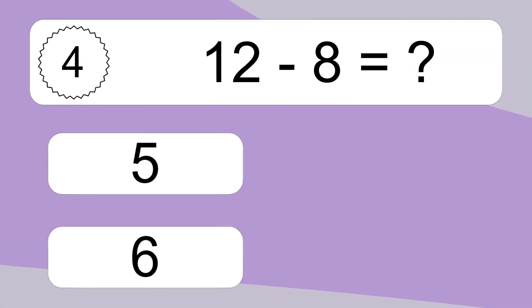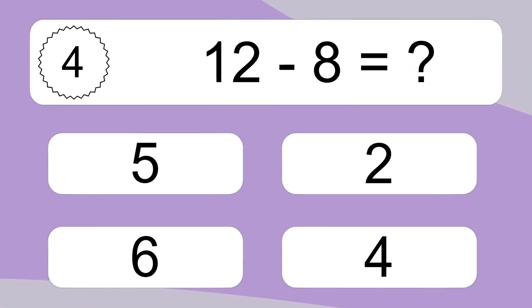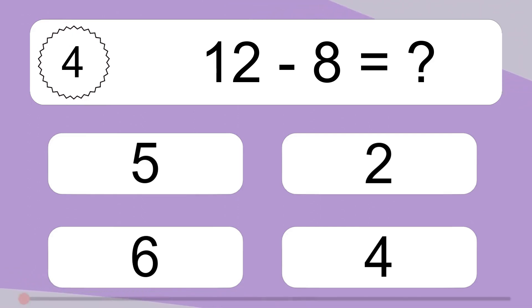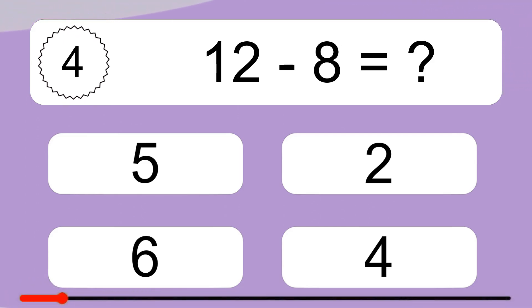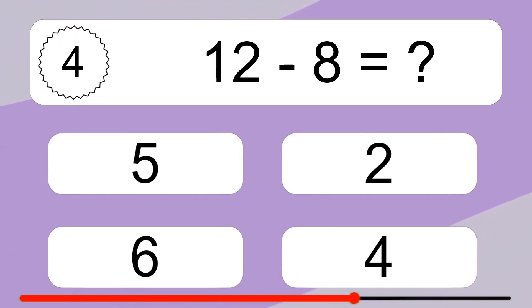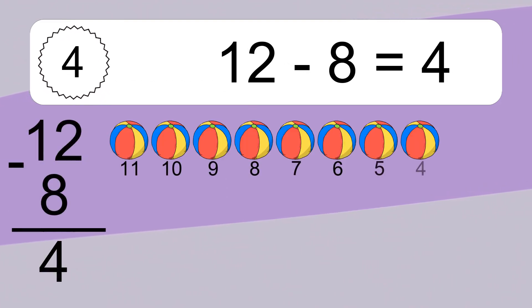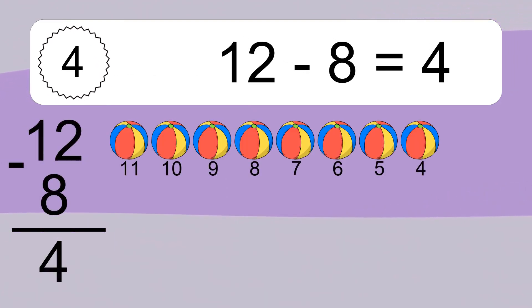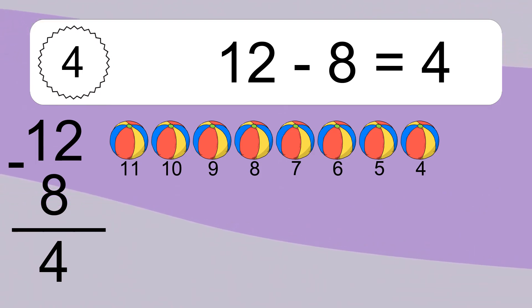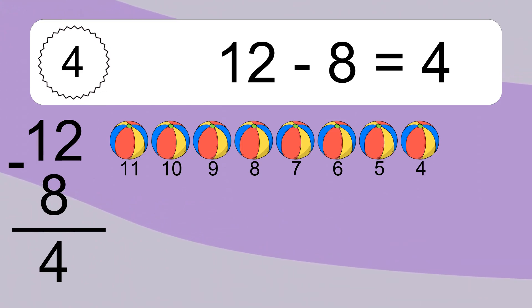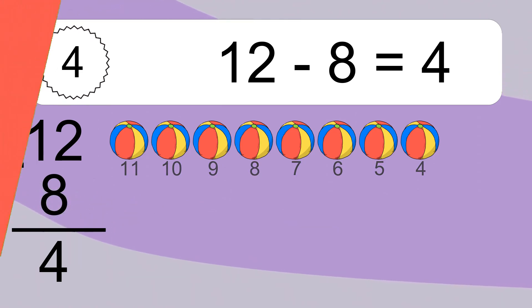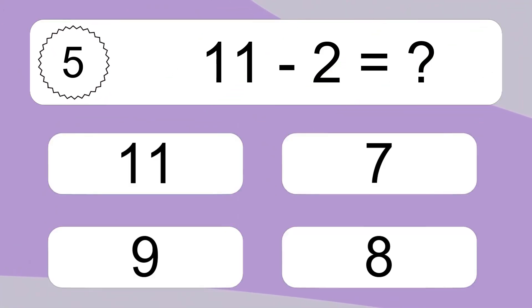12 minus 8 equals what? 12 minus 8 equals 4. Let's count it. 11, 10, 9, 8, 7, 6, 5, 4.